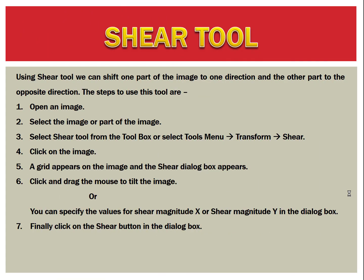Next is the shear tool. Using the shear tool, we can shift one part of the image in one direction and the other part in the opposite direction. The steps to use this tool are: first, open an image and select the image or part of the image. Then select the shear tool from the toolbox, or go to the Tools menu, then Transform, and choose the Shear option.